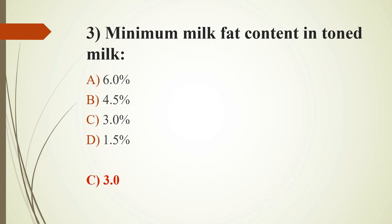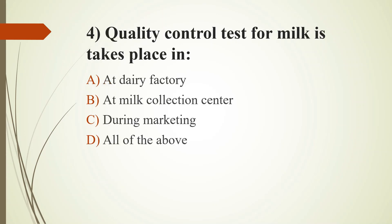Toned milk has not more than 0.5% fat content variation. Fourth question: Quality control tests for milk take place at — Option A: dairy factory; Option B: milk collection center; Option C: during marketing; Option D: all of the above. The answer is Option D: all of the above. Apart from these, there are a few others like at farm level and within the dairy factory.